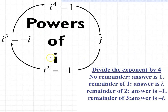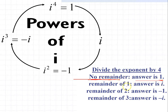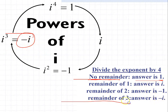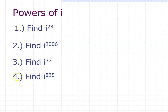We can conclude that powers of i follow a pattern of 4. So whatever the exponent of an imaginary number, we divide it by 4 if it is more than 4. If there is no remainder, the answer is 1. If the remainder is 1, the answer is i. If the remainder is 2, the answer is negative 1. If the remainder is 3, the answer is negative i.